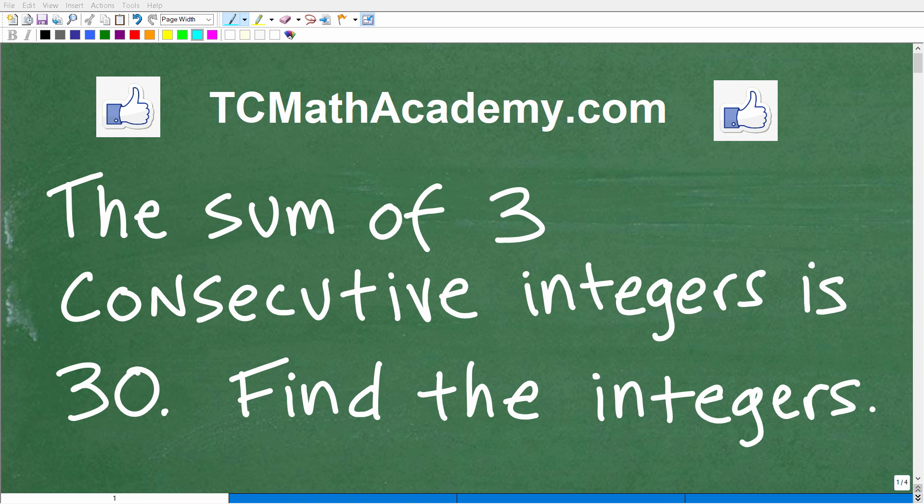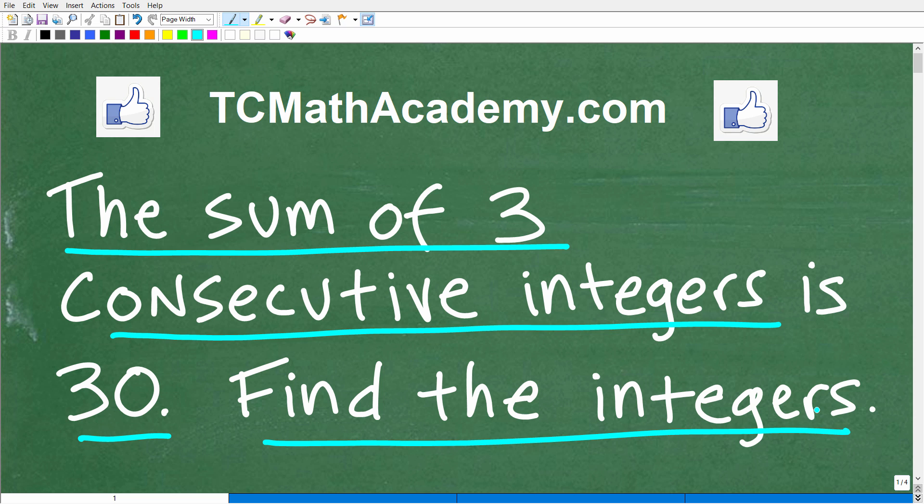Okay, so there are certain types of algebra problems that all algebra students must master, and this is one of those types of problems. It's a very common type of problem in algebra. But even if you don't know algebra, let's see if you can figure this out. The problem is the sum of three consecutive integers is 30. We want to find the integers.